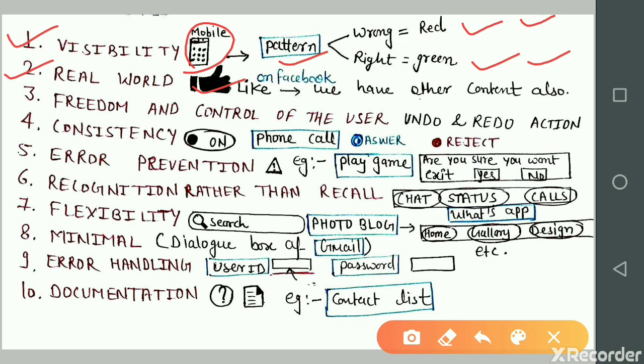Principle number three is freedom and control of the user. Example: if you are using mobile when you have opened multiple applications or windows, make easy the emergency exit for the user. Allow undo or redo action in the system.